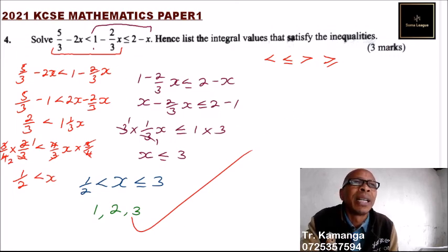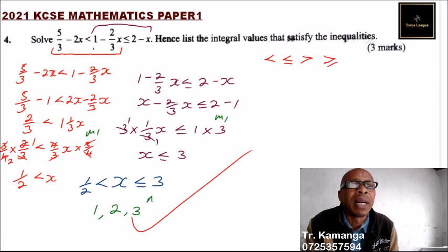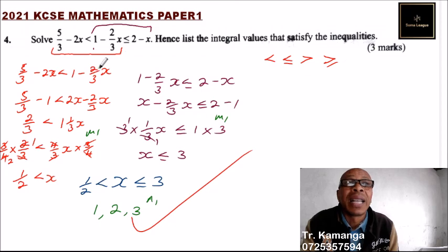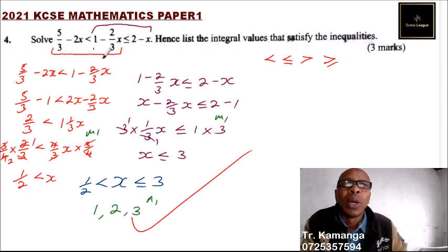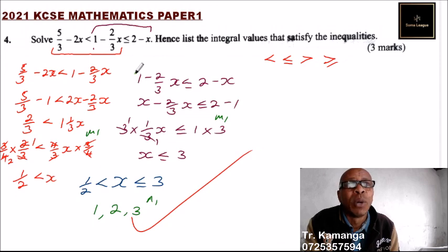You get a method mark for solving the first inequality, a method mark for the second, and 1 mark for the answer — totalling 3 marks. The important thing is that this is how we solve inequalities, which you learned in Form 2, and this is what is being tested. Remember, in Paper 1 you are tested on work covered in Form 1 and Form 2, so you should be able to remember that.